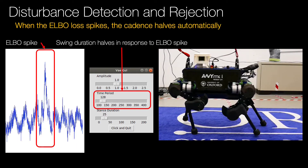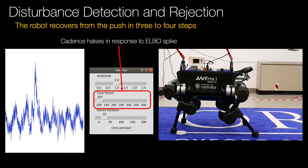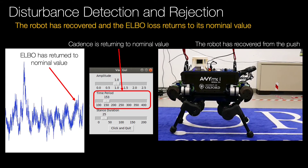Next, the VAE planner halves the swing duration to aid in recovery from the disturbance. This is inspired by studies into human locomotion which report that an increase in cadence is a recovery response to both push and trip incidents. The robot recovers and this usually takes between 3 and 4 steps. The swing duration is still reducing to a recovery value of 125ms. Now the robot has recovered successfully, the swing duration is increasing back to 250ms, its normal value.